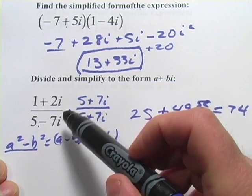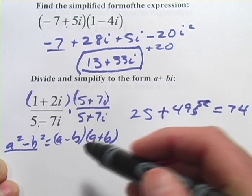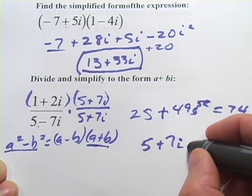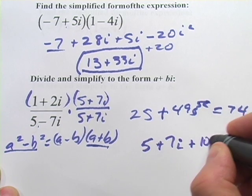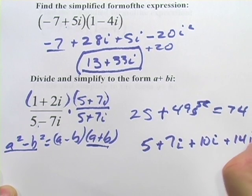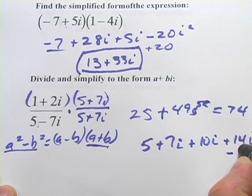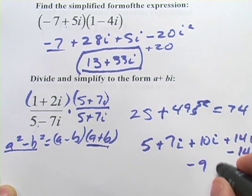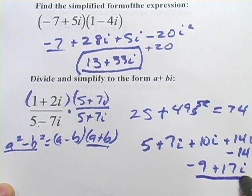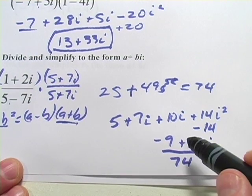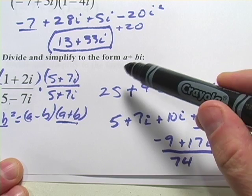Now let's work on the top. We're going to FOIL this. So we would get 5 + 7i + 10i and then + 14i². But remember, that's actually -1, so this is like -14. So 5 and -14, that's going to be -9. 9 + 17i, and that goes over 74. Remember, we found out that was the value on the bottom.